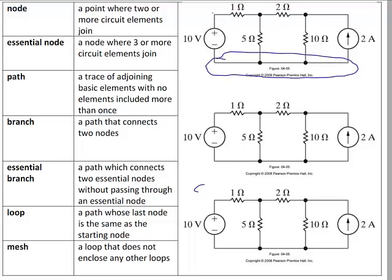The next node is at the top left — the meeting point of the 10 volt and the 1 ohm resistor. The next node is the meeting point for the 1 ohm, the 2 ohm, and the 5 ohm resistor. And the final node is at the meeting point of the 2 ohm and the 2 amp current source. There are four nodes in the circuit. It is very important that you not count the dots. The dots indicate a connection point, but not necessarily the nodes.